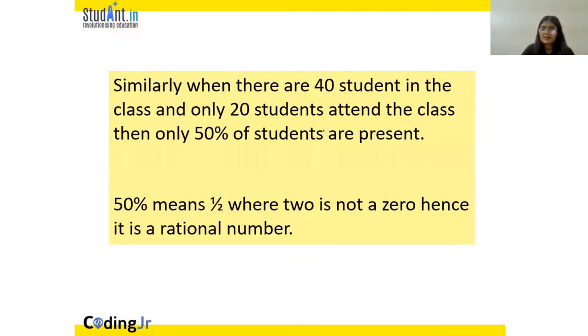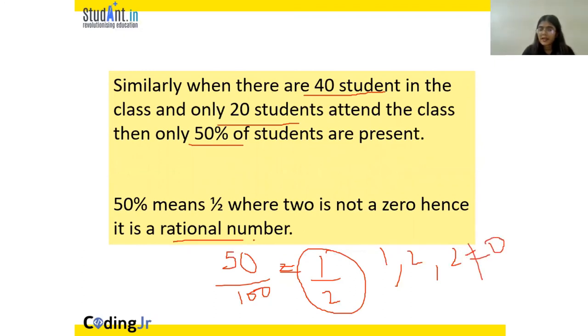Let's take another example. Let's say there are 40 students in your class and only 20 students attended the class. So, what does the teacher say? Teachers say 50% of the students are present today. What is 50%? 50% basically means 50 by 100 which is equal to 1 by 2. Now, this is a rational number. How to check? We know that 1 is an integer. We know that 2 is an integer. And we also know that 2 is not 0. So, we can say that it is a rational number too.